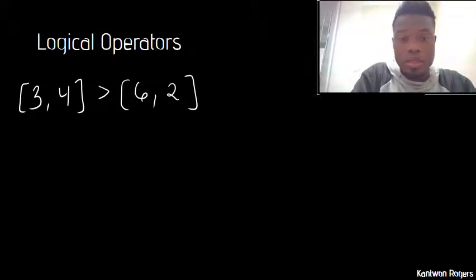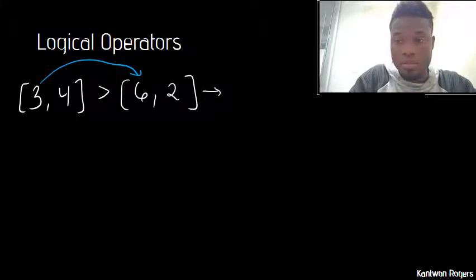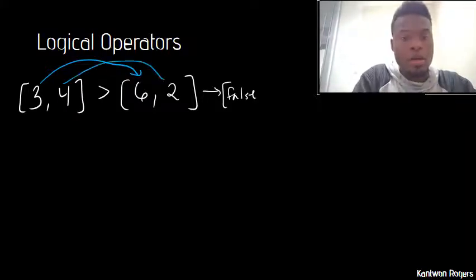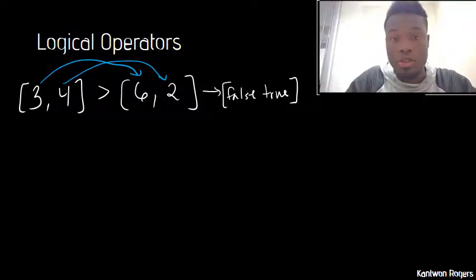The first thing it's going to look at, it's going to say, is three greater than six? That's not true. So therefore that produces back a false of class logical. Then it's going to say, is four greater than two? That's true. So therefore it's going to produce back a true, which is class logical.